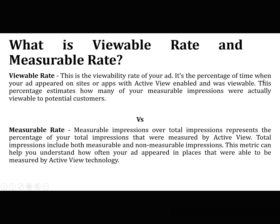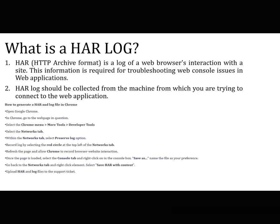What is viewable rate and measurable rate? The viewable rate is the percentage of time your ad appeared on sites or apps with Active View enabled and was viewable. This estimates how many of your measurable impressions were actually viewable to potential customers. The measurable rate is measurable impressions over total impressions — the percentage of total impressions that were measured by Active View. Total impressions include both measurable and not-measurable impressions.